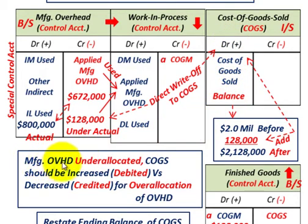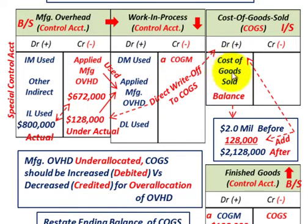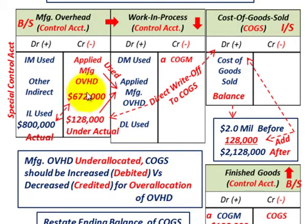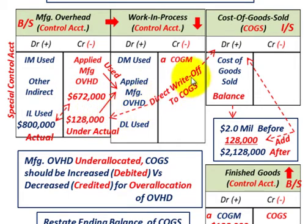The key rule here: if overhead is under-allocated, cost of goods sold should be increased or debited — we haven't allocated the total actual overhead for the year, so we must debit cost of goods sold for any under-allocated overhead. The opposite is true for over-allocation. For example, if we had applied $800,000 in overhead but actual costs were only $672,000, we would have over-allocated $128,000. In that case, using the direct write-off, we would credit or reduce cost of goods sold by that $128,000.